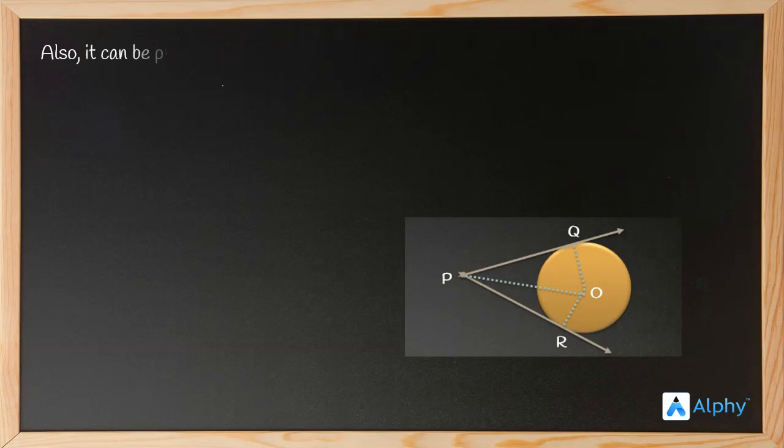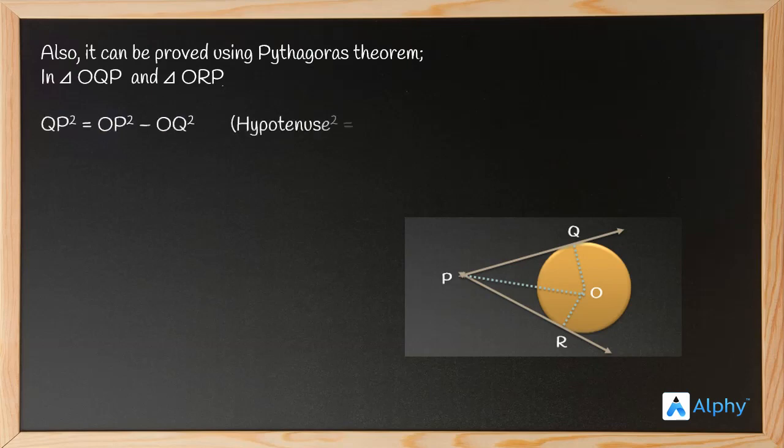Now the same can be proved in another way using the Pythagoras theorem. In triangles OQP and ORP, which are right-angle triangles, QP² equals OP² minus OQ² by the Pythagoras theorem.